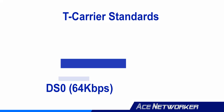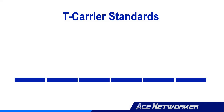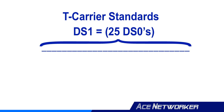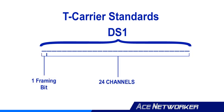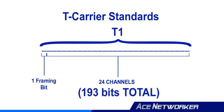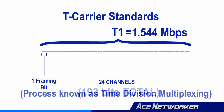The digital signal sent across a T1 connection was known as a DS1. The DS1 frame consisted of 25 pieces altogether — one framing bit and 24 channels. Each DS1 channel holds an 8-bit DS0 data sample. The framing bit and the data channels make a total of 193 bits in each DS1 frame. These frames were transmitted at 8,000 times per second for a total throughput of up to 1.544 megabits per second — that's 25 times 64 kilobits per second DS0 channels. This process of having frames carry a portion of every channel on a regular interval became known as time division multiplexing, or TDM.